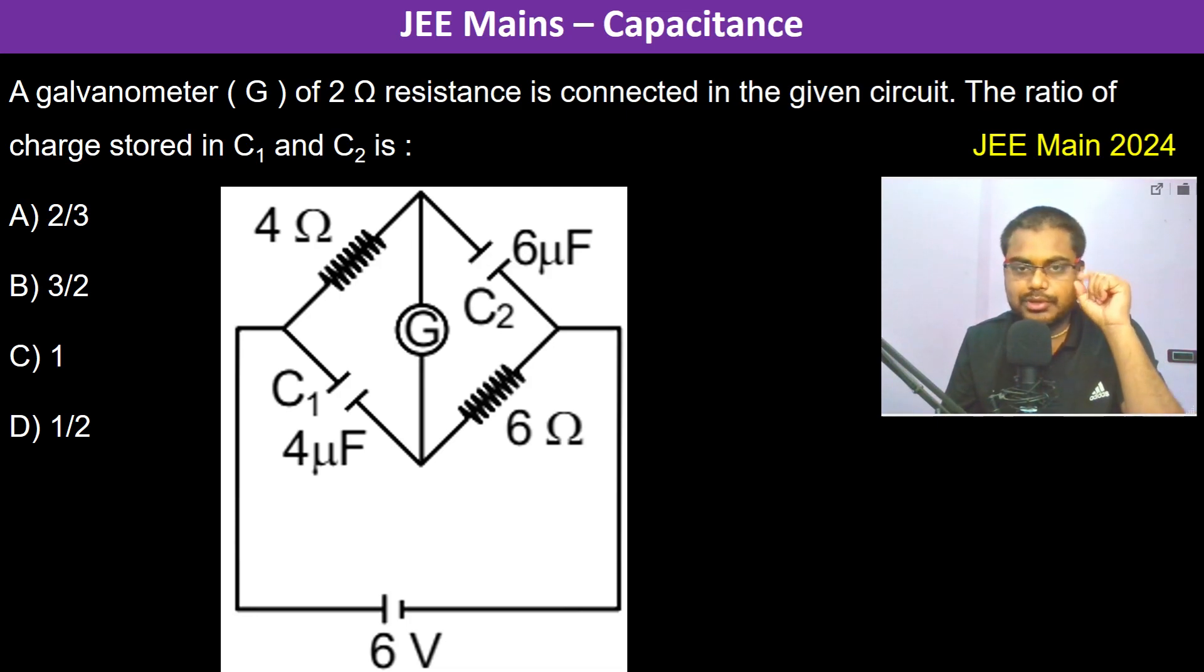A galvanometer G of 2 ohm resistance is connected in the given circuit. The ratio of the charge stored in C1 and C2 - we are being asked what is the ratio of the charge stored in C1 and C2.